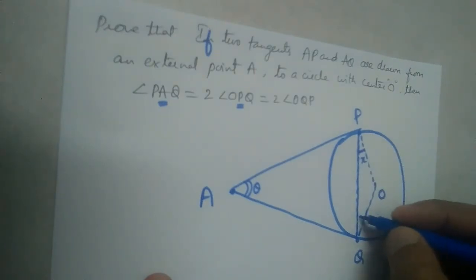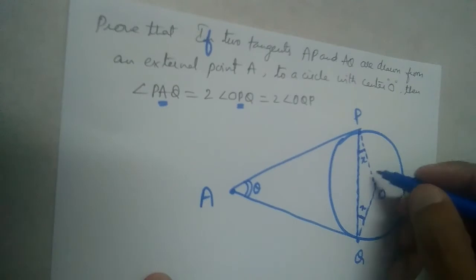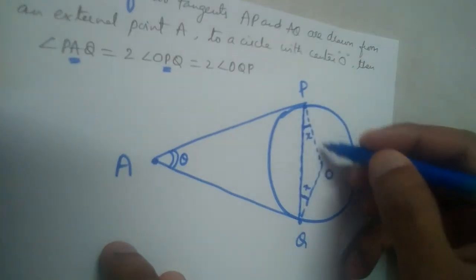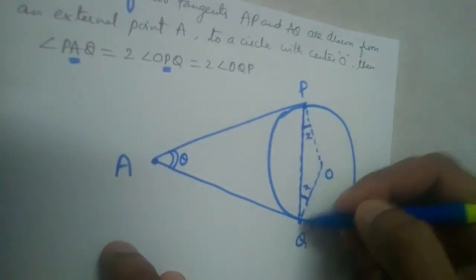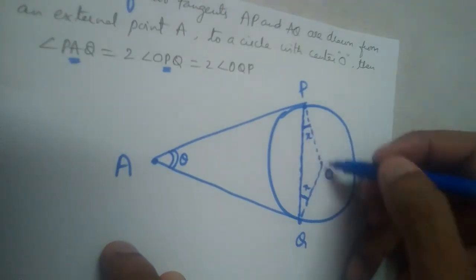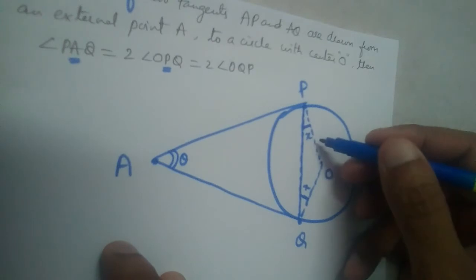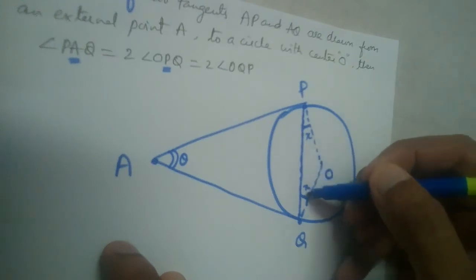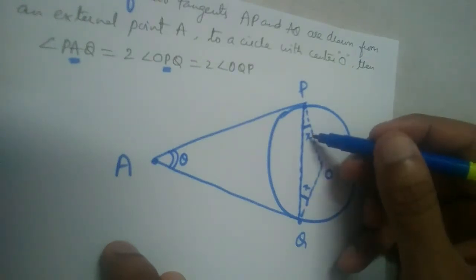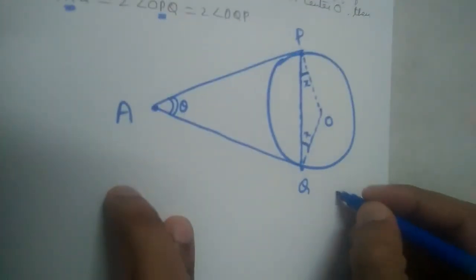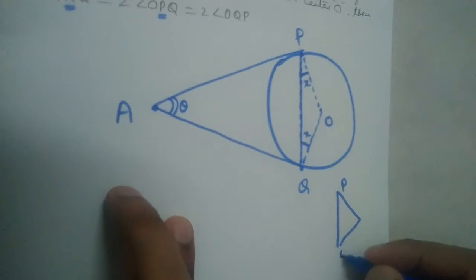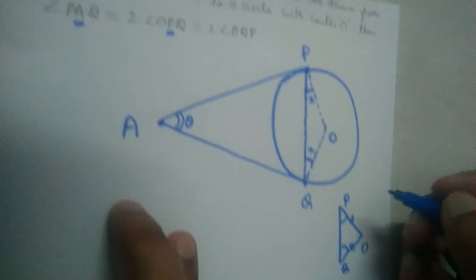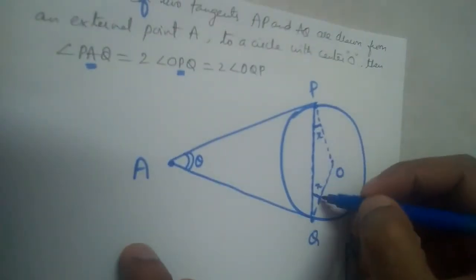These two angles, angle OPQ and angle OQP, will be equal. We are naming both as x. Why will these two angles be equal? Because OP and OQ are radii of the circle, so OP equals OQ. In triangle OPQ, two sides are equal, so their opposite angles will also be equal. OP is a side, its opposite angle is x; OQ is a side, its opposite angle is also x.